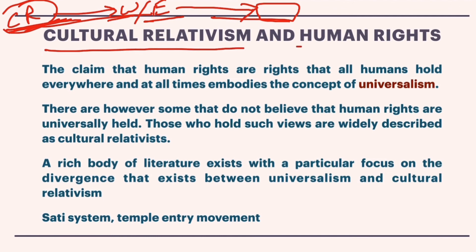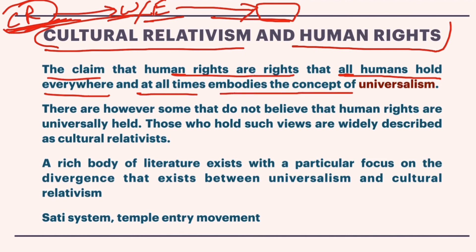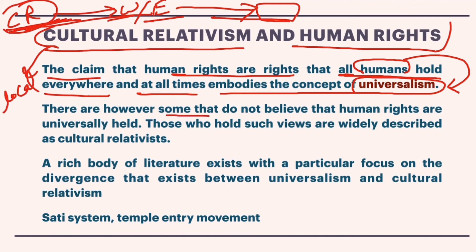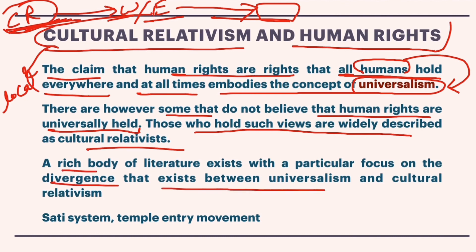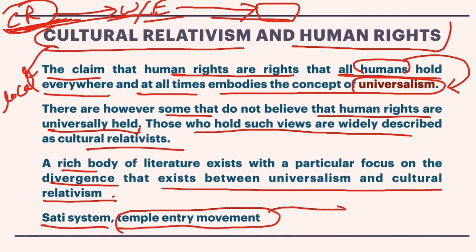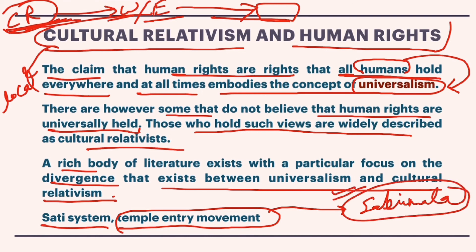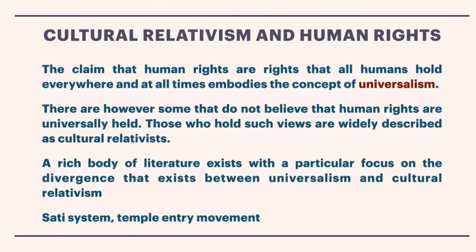Cultural relativism versus human rights: the claim that human rights are rights held by all humans everywhere and at all times embodies universalism, but cultural relativism focuses on local dimensions. Cultural relativists do not believe human rights are universally held. Examples like the sati system, temple entry movements, and recent Sabarimala incidents illustrate this debate — from a cultural relativist perspective, these traditions are right, but from a human rights perspective, they are wrong. This debate is still ongoing.